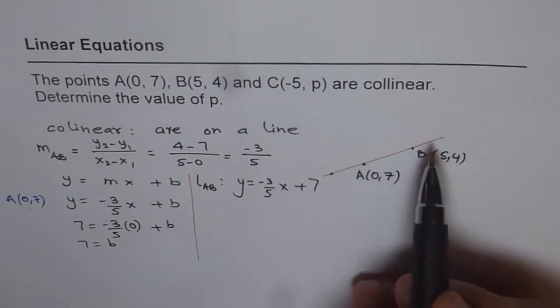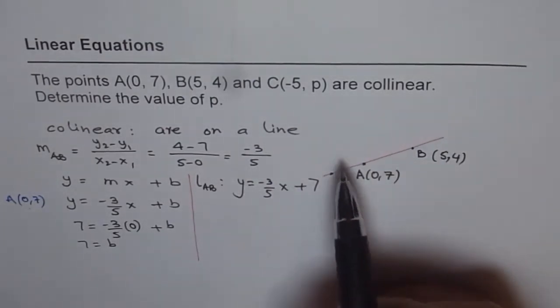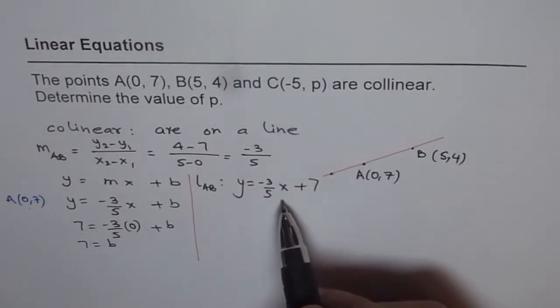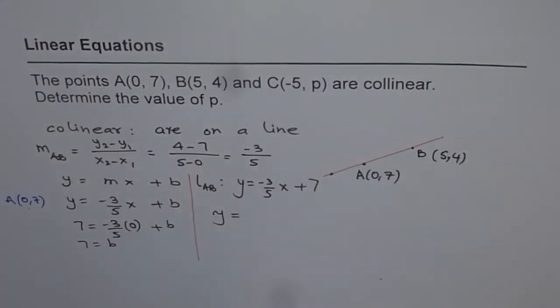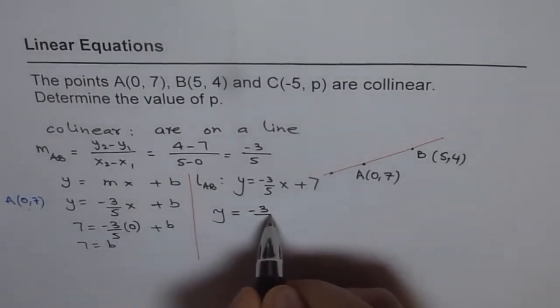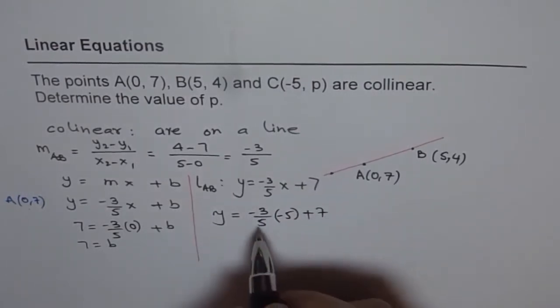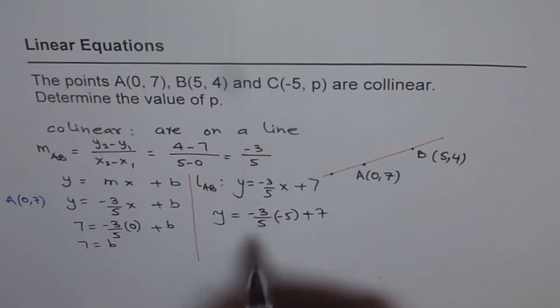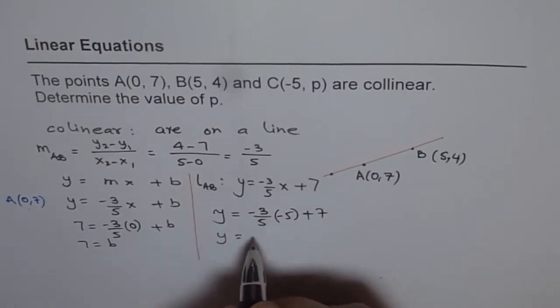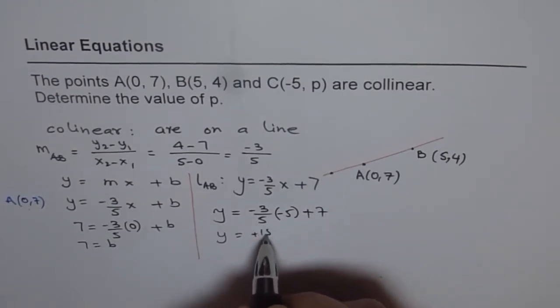Now, if point C lies on the same line, then it is collinear. So, we will substitute -5 for x and find the value of y. So, it is -3/5 and x is -5 plus 7. Now, -5 and -5 will give -1. So, when you multiply, you get y equals -3 times -1. That gives you, or let me write like this, plus 15/5 plus 7.